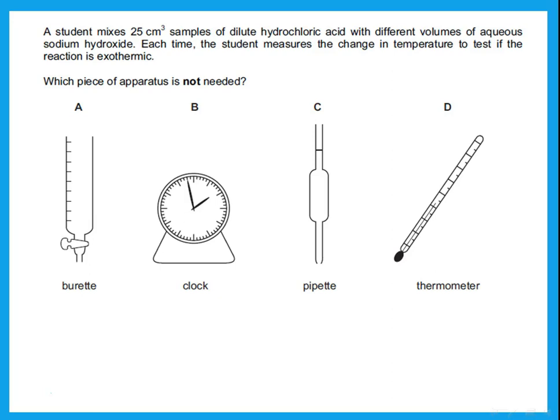The next question: a student mixes a 25 cm³ sample of dilute hydrochloric acid with different volumes of aqueous sodium hydroxide, each time measuring the change in temperature to test if the reaction is exothermic. Which piece of apparatus is not needed? For the 25 cm³ of acid, the student should use a pipette — so pipette is needed, meaning C is not the answer.